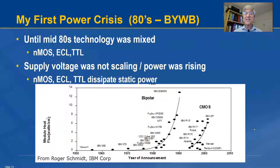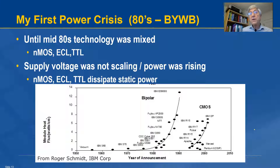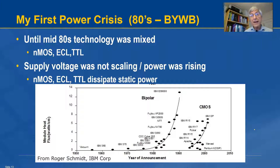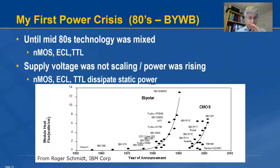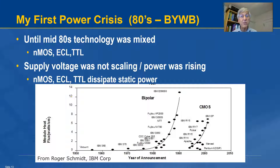My first power crisis was in the 80s — before you were born, probably for most people watching this video. In that time, most of the technology used — NMOS, ECL, or TTL — all had some static power dissipation. During that period, power supplies were not scaling very much, so powers increased and the power density in the machines we were building was going up. We got very worried when the power density in watts per square centimeter got to about 10 — we're way past that now. We decided we needed to do something to be more energy efficient, so we moved to a technology with very little static power dissipation.